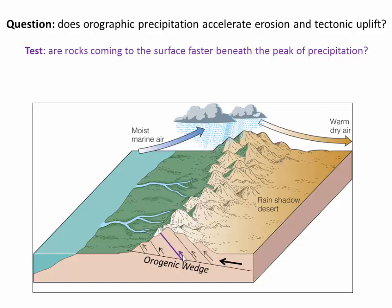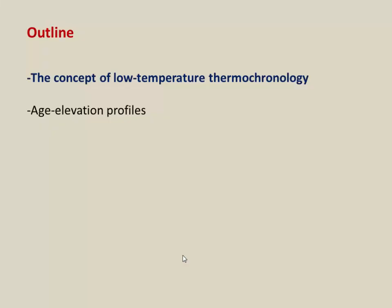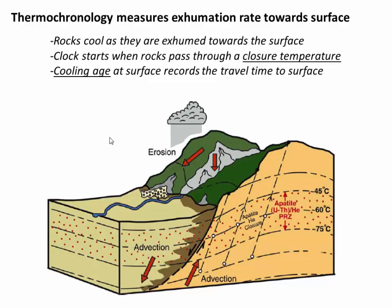One question we might ask is: does precipitation actually accelerate erosion and thus tectonic uplift within certain parts of an orogenic wedge? So how might we actually test this question? We need a way to determine how quickly rocks are coming to the surface over time, and thermochronology does just that. In this video, I'm going to first talk about the concept and some of the basics of low-temperature thermochronology, and then we're going to look at how age elevation profiles can let us document changes in exhumation rate over time.